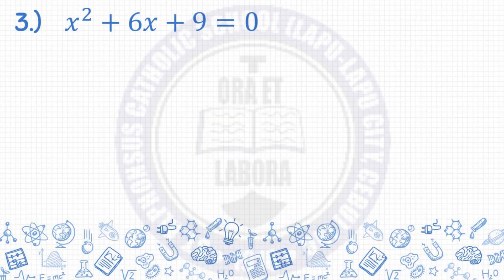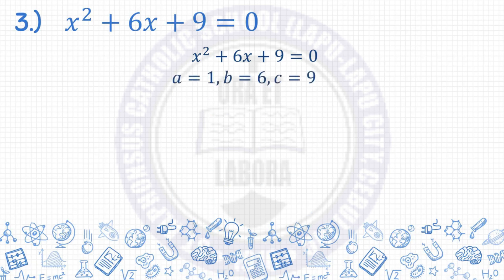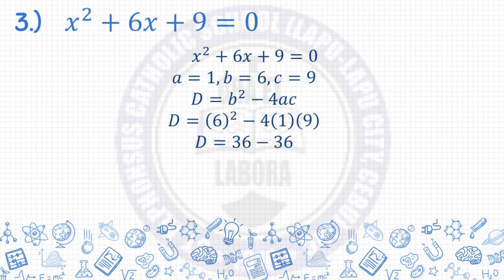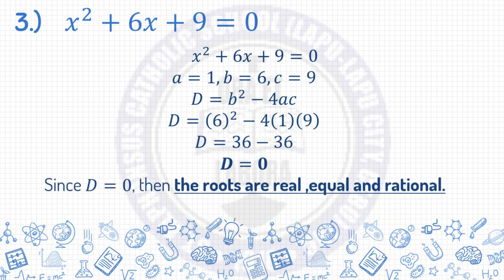Number 3: x squared plus 6x plus 9 equals 0. The given equation is already in the general form, so all we need to do is determine the values of a, b, and c: a is 1, b is 6, c is 9. Write the formula for the discriminant: d equals b squared minus 4ac. Substituting, 6 squared is 36, and negative 4 times 1 times 9 is negative 36. So 36 minus 36 is 0. Since the value of the discriminant is 0, the roots are real, equal, and rational.